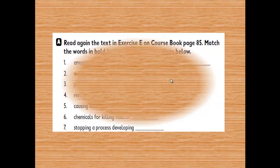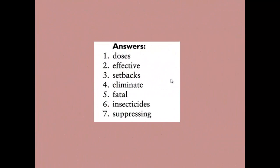Here are the answers: number one — amounts of a drug or medicine that should be taken: doses. Two — working well and having the intended result: effective. Three — problems that cause a delay: setbacks. Four — remove something forever: eliminate. Five — causing someone to die: fatal. Six — chemicals for killing insects: insecticides. Seven — stopping a process from developing: suppressing.